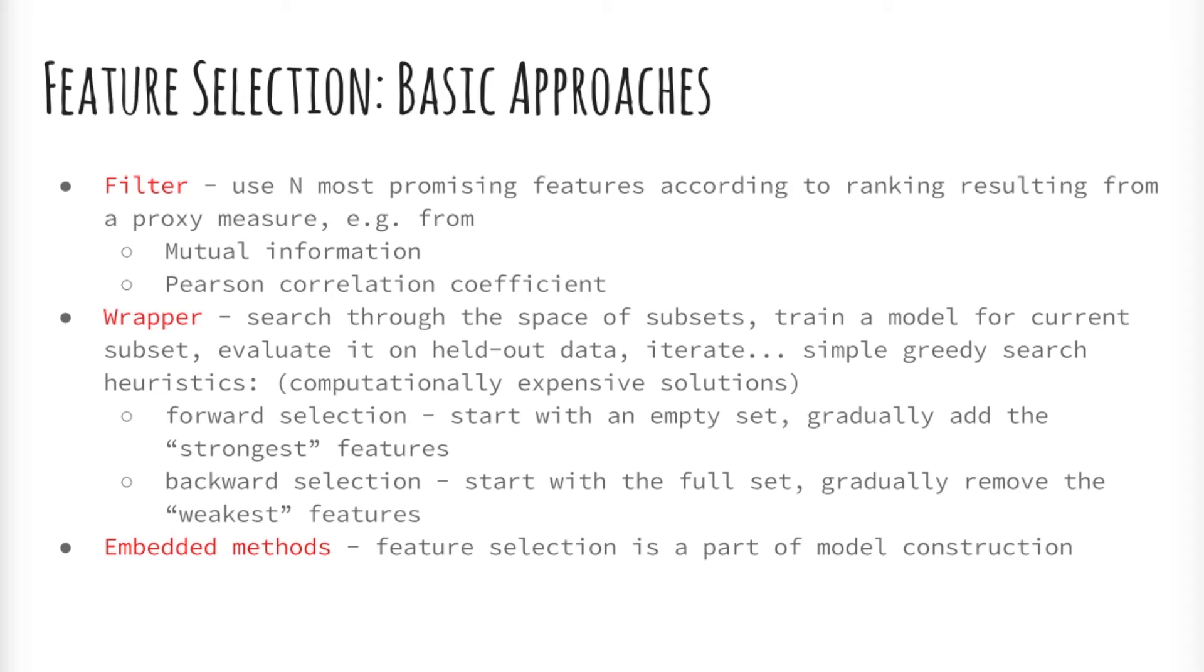Wrapper methods consider the selection of a set of features as a search problem where different combinations are prepared, evaluated, and compared to other combinations. A predictive model could be used to evaluate a combination of features and assign a score based on model accuracy. The search process may be methodical such as a best first search, it may be stochastic such as a random hill climbing algorithm, or it may use heuristics like forward and backward passes to add and remove features. An example of a wrapper method is the recursive feature elimination algorithm.